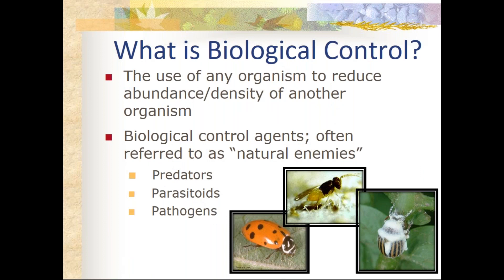Let's start with some definitions. Biological control is the use of any organism to reduce the abundance or density — the number occurring per unit area — of a pest organism. There are a few key agents: predators, parasitoids, and pathogens — the three Ps. Broadly we speak of these as beneficial insects, and when we include pollinators we get the four Ps of beneficial insects: predators, parasitoids, pathogens, and pollinators.